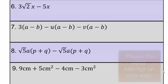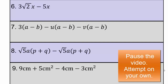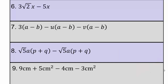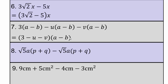Pause the video and attempt the next problems on your own, making sure you're looking at like units. For 3√2·x minus 5x: the unit is x, but √2 and 5 are different coefficients; since √2 and 5 are not like, we write (3√2 − 5)x. For 3(a−b) minus u(a−b): the unit is (a−b), giving (3−u)(a−b).